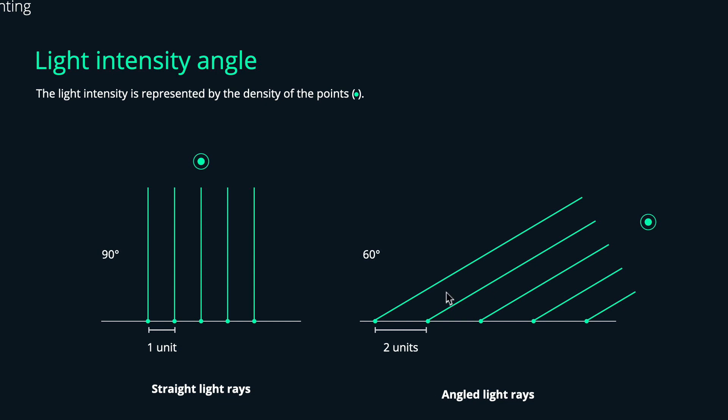This is important for placement of lights in your scene. If you place your light source straight to your object in a perpendicular way then it will get more light than if the light source is angled in some way to your object.